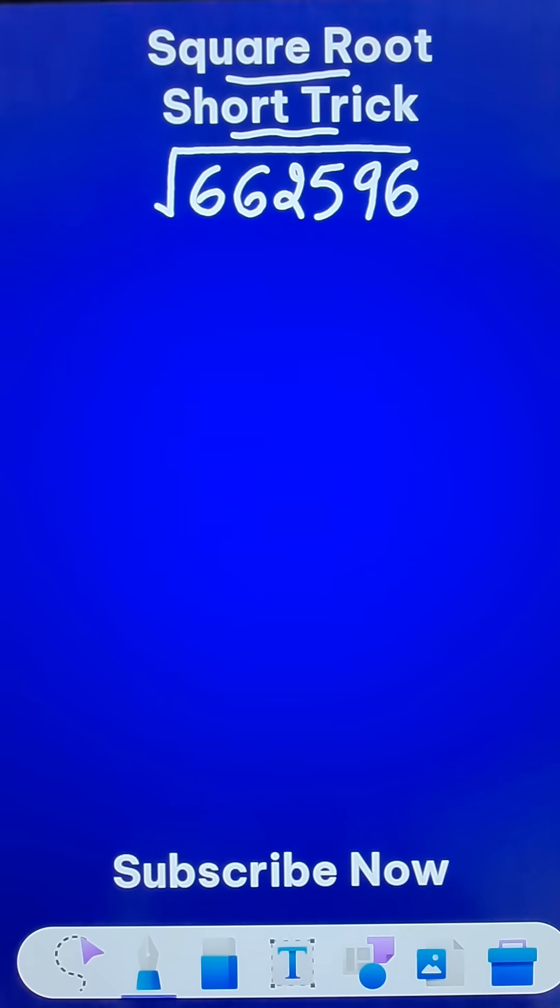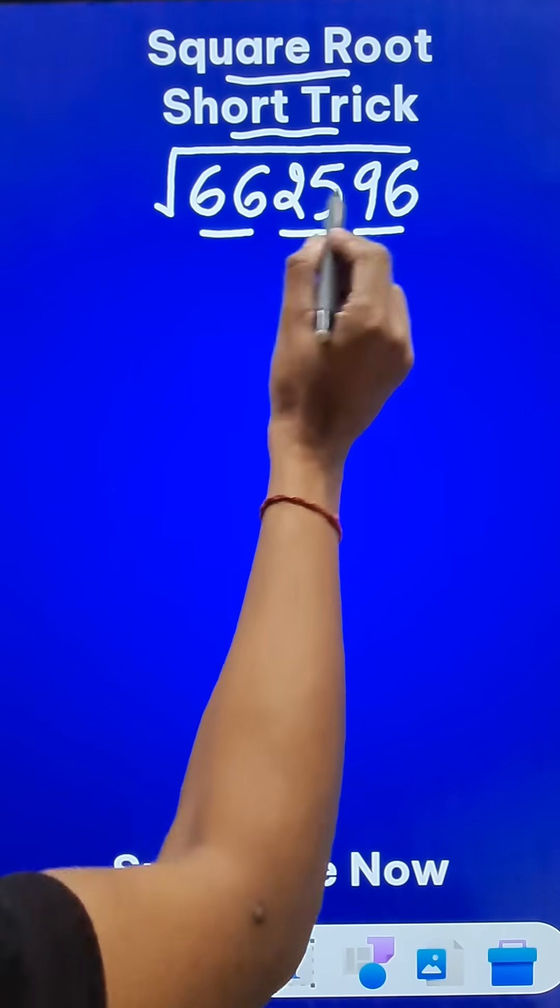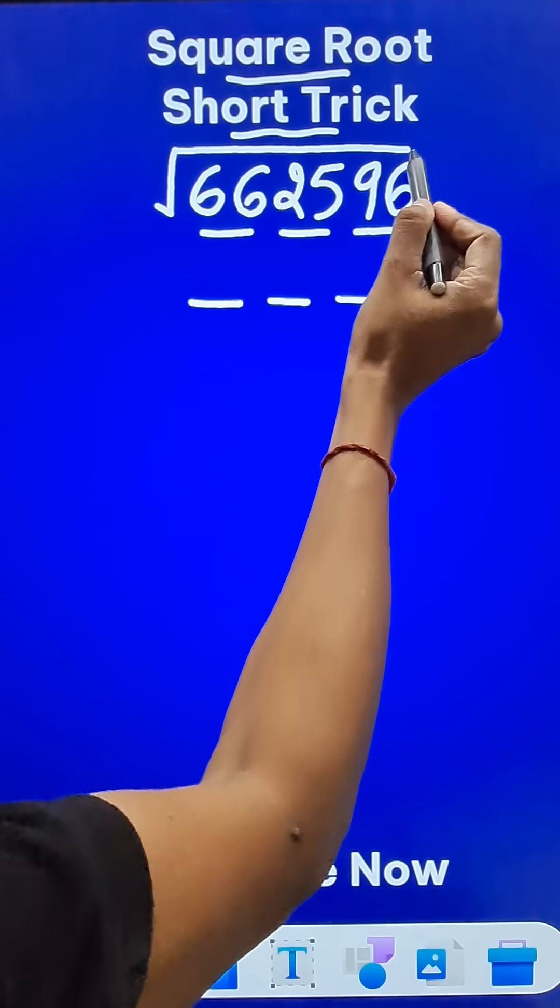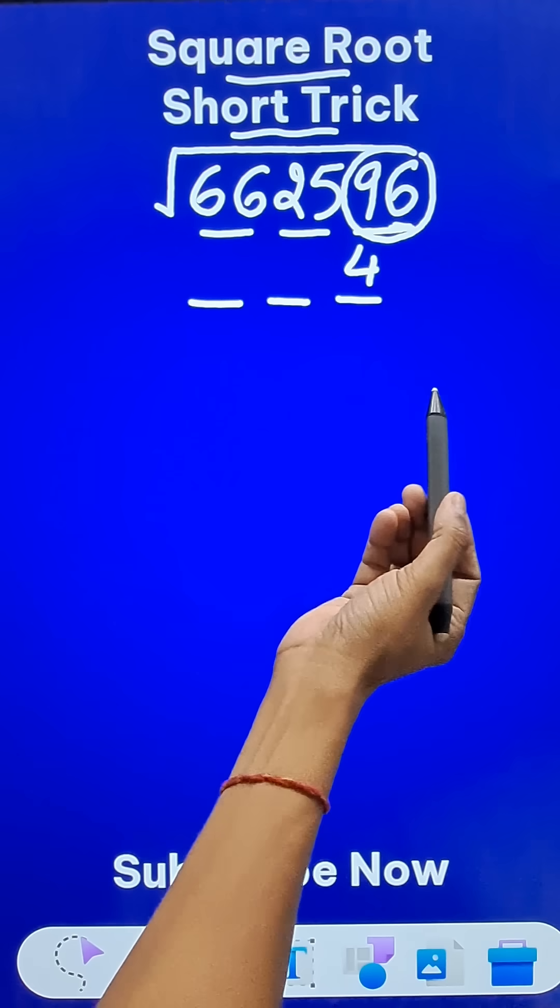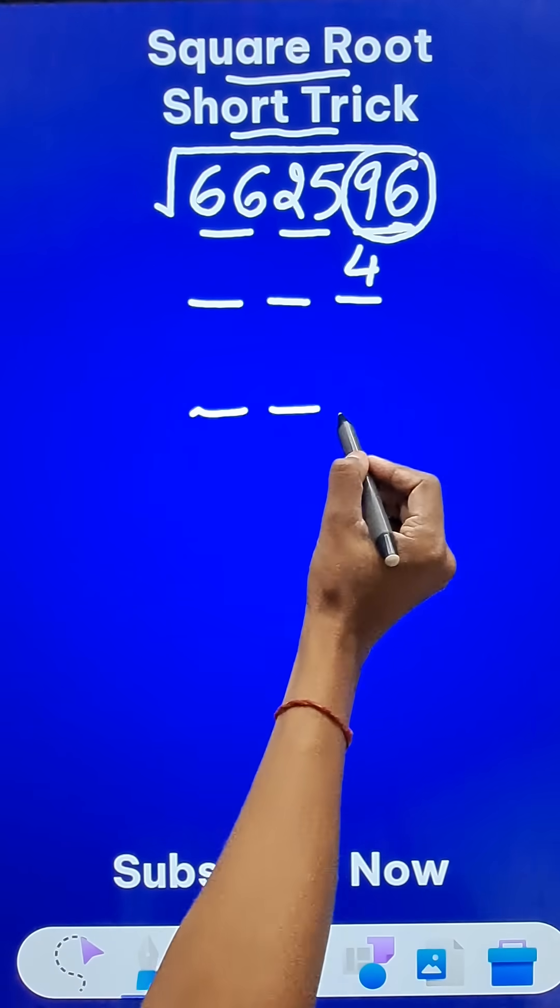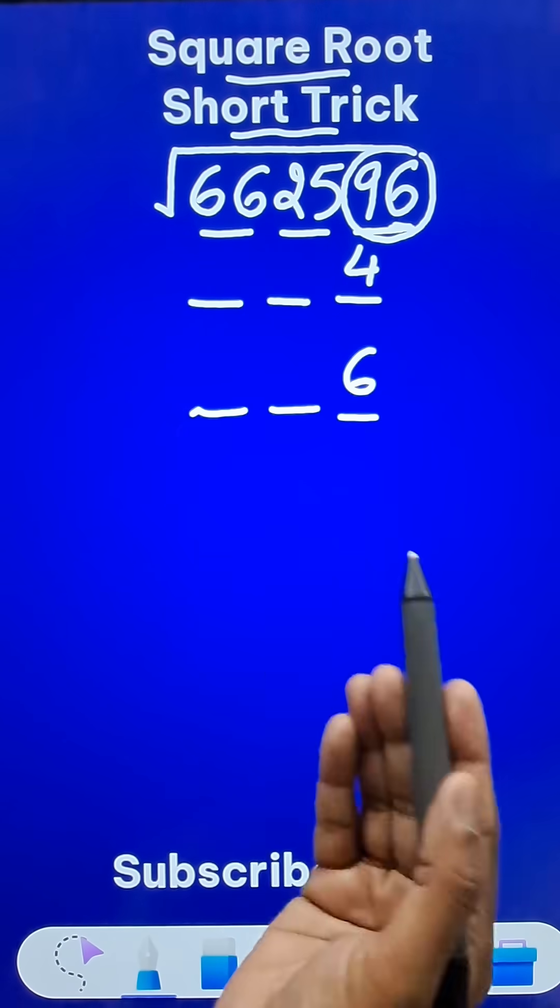Now watch this, 662596. Let's make pairs. So we have 3 pairs, so our answer will be a 3-digit number. The last pair, 96, ends in 6. 4 square is 16, that ends in 6. Or 6 square is 36, that ends in 6. So your unit digit should be either 4 or 6.